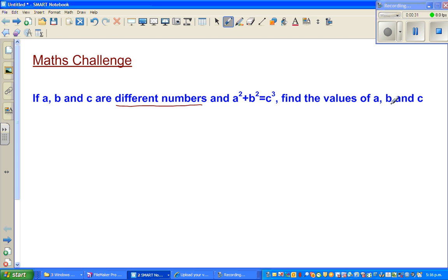Now the important information is a, b, c are different numbers. To do this, the best way is by guess and check or trial and error method.